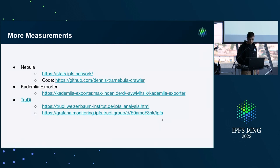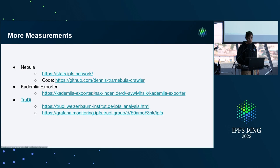I can send these slides out afterwards if you're interested. These are different groups of people who collect metrics on the DHT. Dennis has a nice crawler called Nebula where he publishes statistics — I think they're daily now — about who's on the network, how big it is, and different performance characteristics. And then Max from libp2p, who maintains the Rust libp2p implementation, has a nice Grafana dashboard.